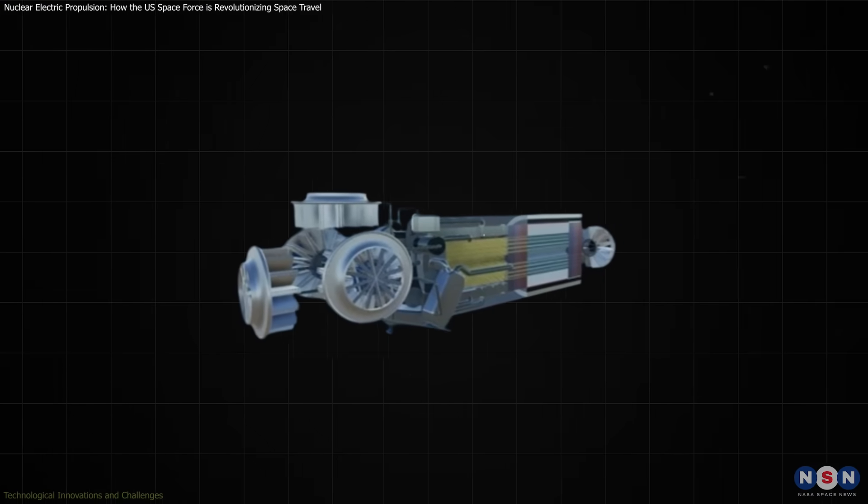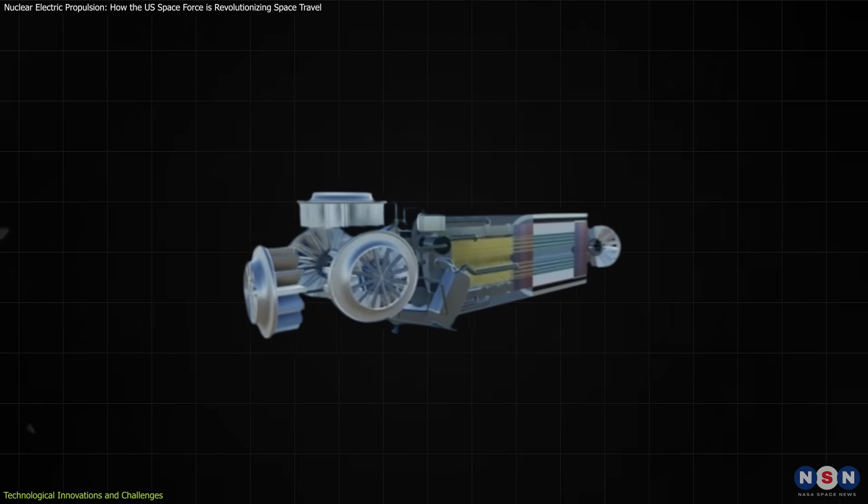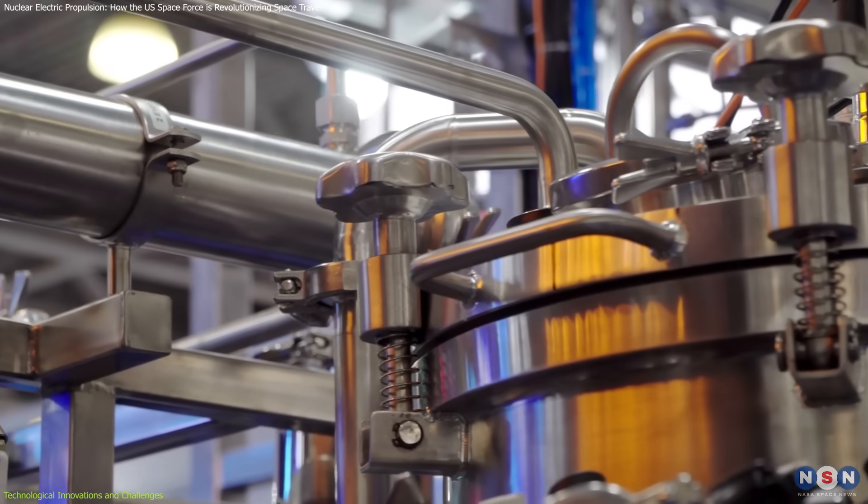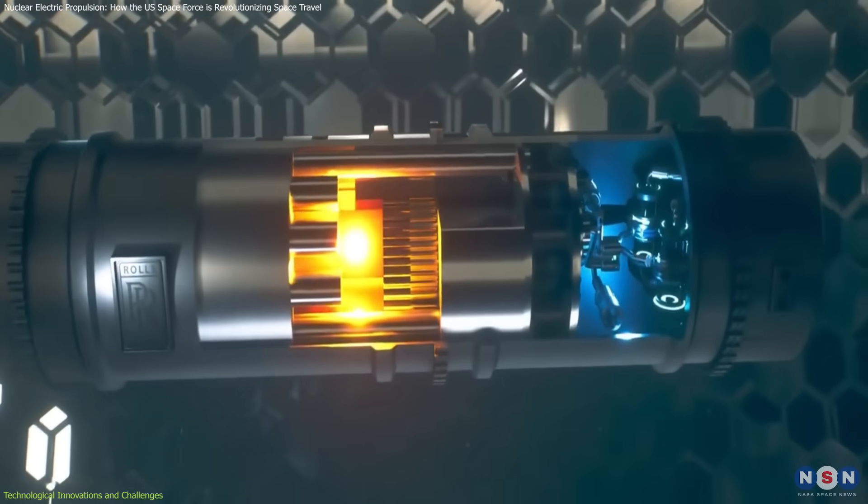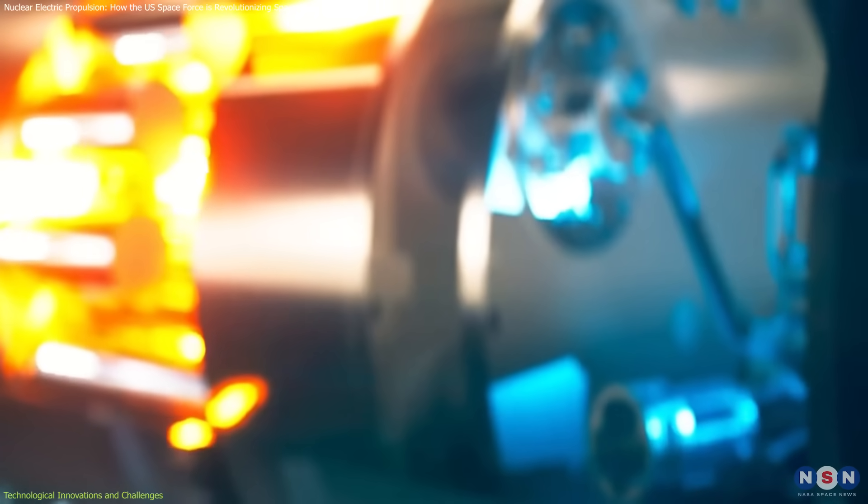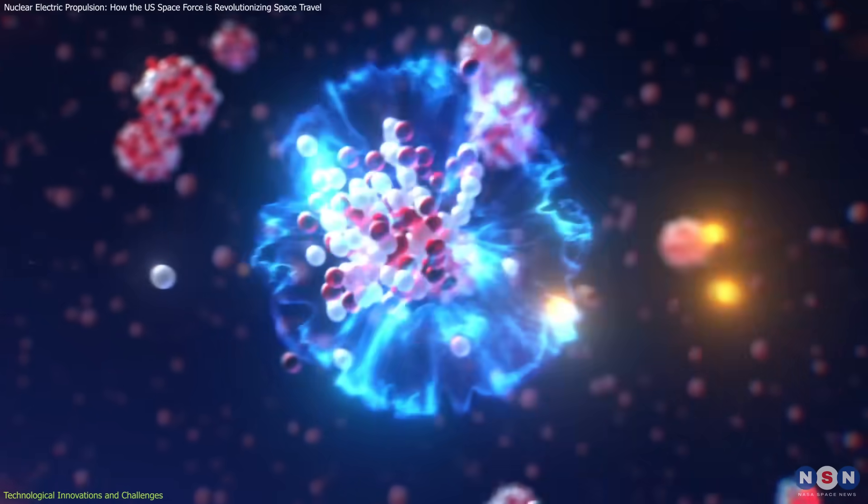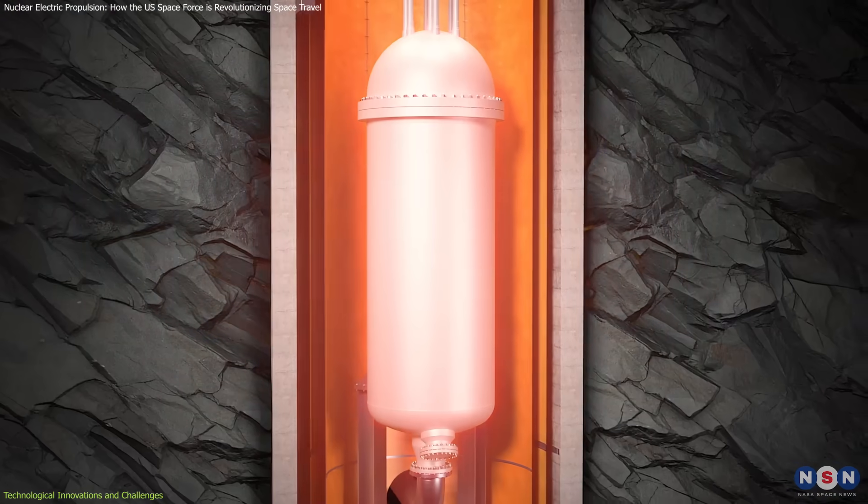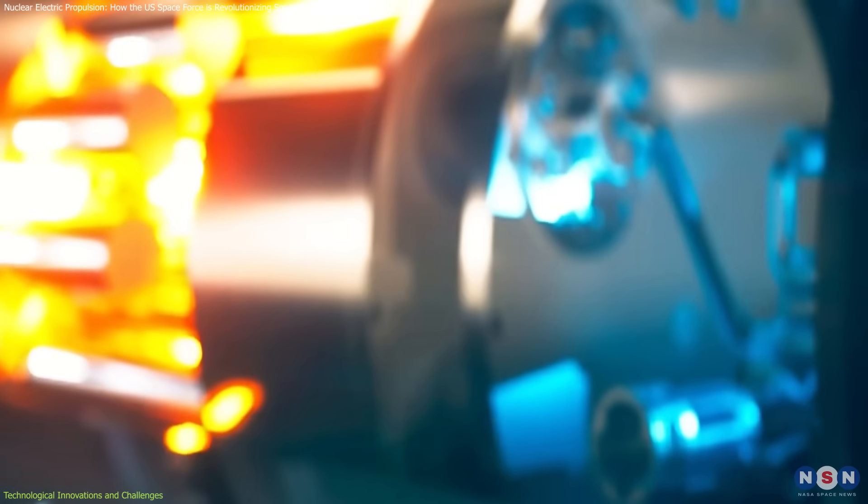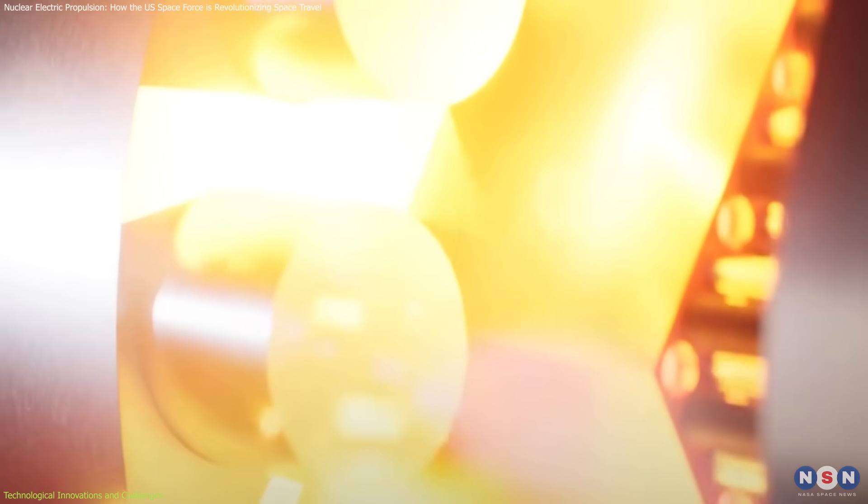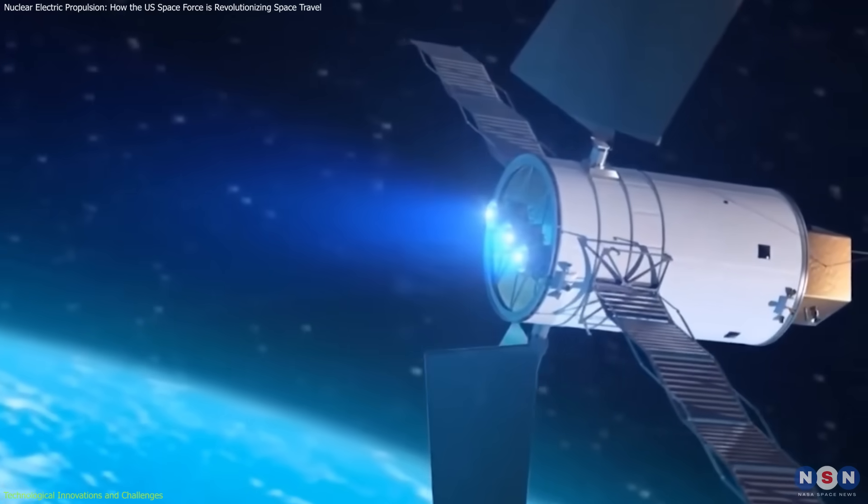At the heart of this project is the nuclear microreactor. Unlike the large nuclear reactors used for power generation on Earth, a microreactor must be compact and robust enough to withstand the rigors of space. It operates by splitting atomic nuclei, a process that releases a vast amount of heat. The key is converting this heat into electricity efficiently enough to power the spacecraft's systems and electric thrusters.